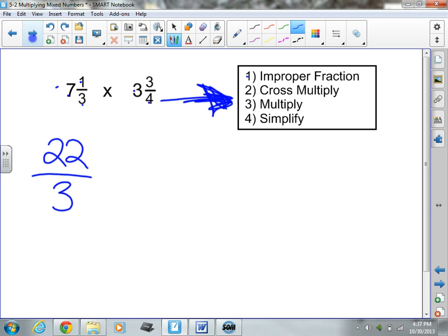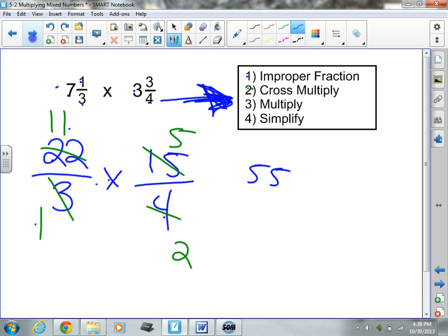Now, I'm going to look. Can I cross multiply? Well, I'm looking at 22 and 4. If I divide both of those by 2, if I divide both sides by 2, that would be a 2 right here. That would be an 11 right there. And then, if I divide both sides by 3 here, that would be a 1. And this will become a 5. Bam! I just made my life a lot easier by cross-multiplying. So, I multiply 11 times 5 is going to be 55. 1 times 2 is going to be 2.